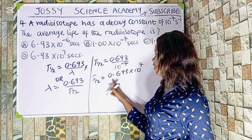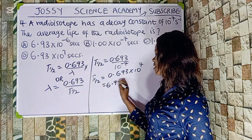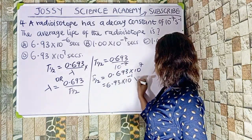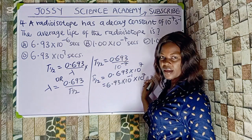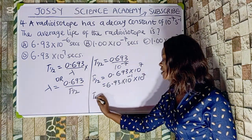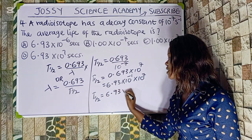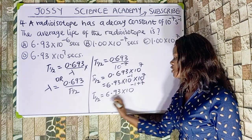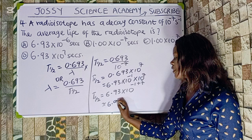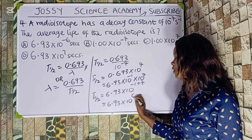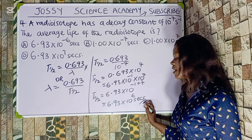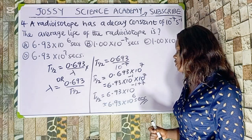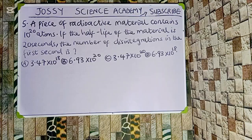Substituting: half-life equals 0.693 over 10 to the power of minus 7. Bringing minus 7 to the numerator changes the sign, giving 0.693 times 10 to the power of 7. Writing 0.693 in standard form as 6.93 times 10 to the power of minus 1, then multiplying by 10 to the power of 7, we get 6.93 times 10 to the power of (minus 1 plus 7), which equals 6.93 times 10 to the power of 6 seconds. The correct option is option A.